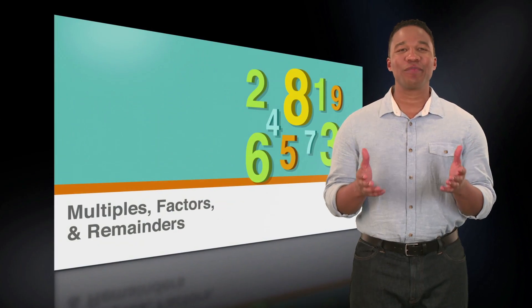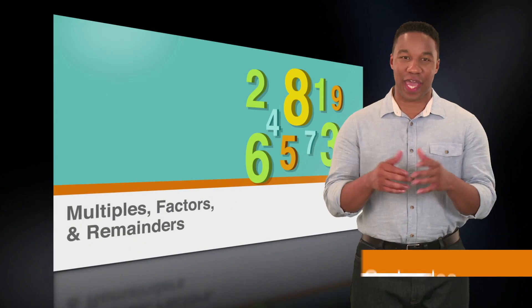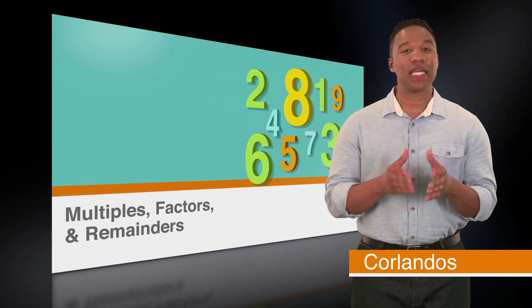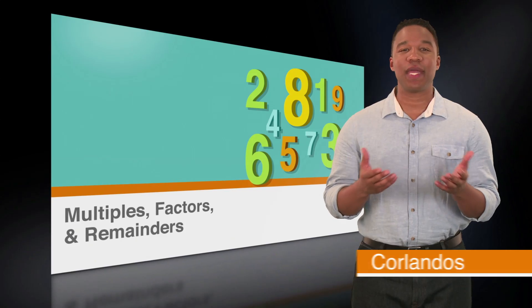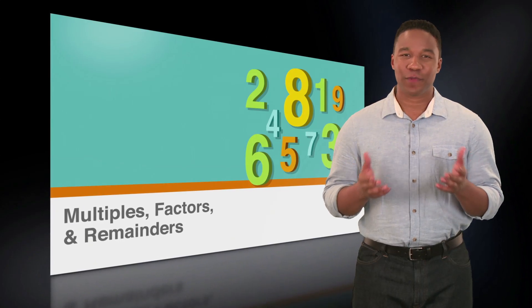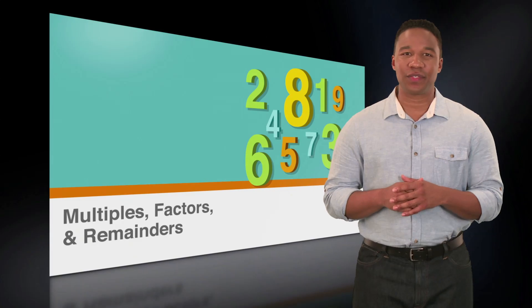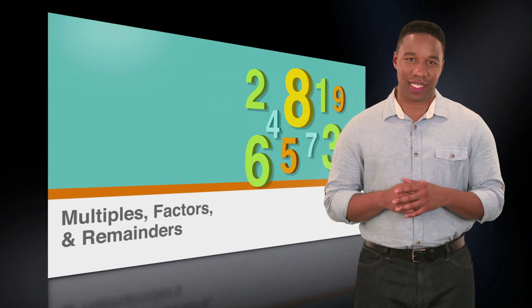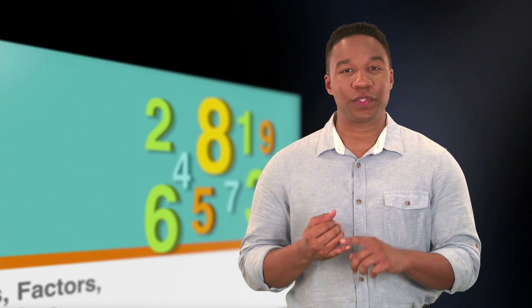Like most things, numbers don't exist in a vacuum. They work together and are related to each other in many ways. One way numbers relate to each other is through common divisibility. In this lesson, we'll cover the concepts of multiples, factors, and remainders. Let's jump in.